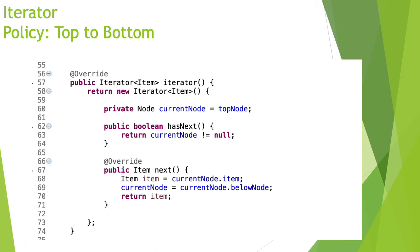For the next method, very similar to the bags, I keep the item at the current node and then advance the current node to the node below. I save the item so I can return it, then move the pointer to the node below. So I return the item that was at the current position when next was called, and point to the next node below.